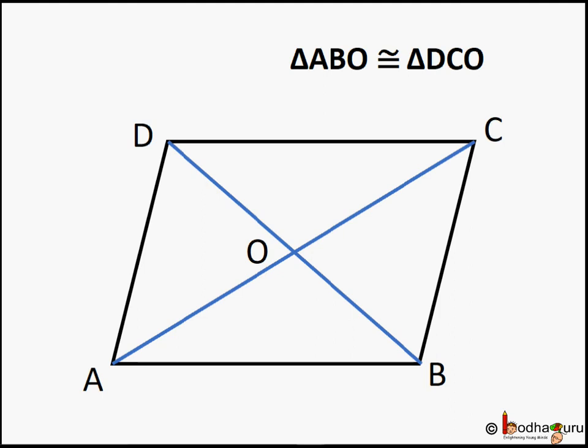So angle OAB is equal to angle OCD because corresponding angles of congruent triangles are equal. But AC is a transversal of AB and DC line pair. Angle OAB equals angle OCD, which are alternate angles. So AB is parallel to CD.